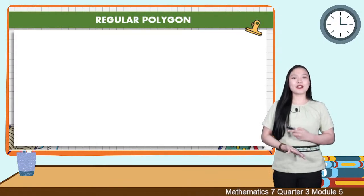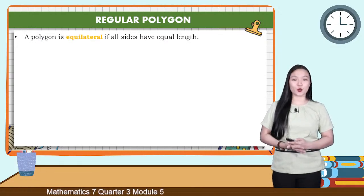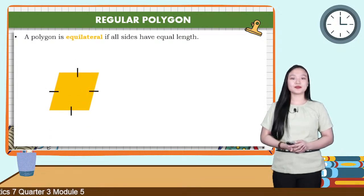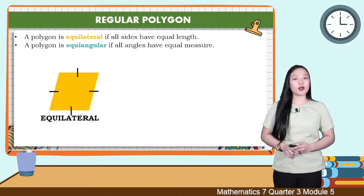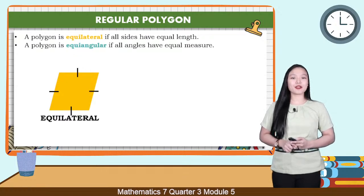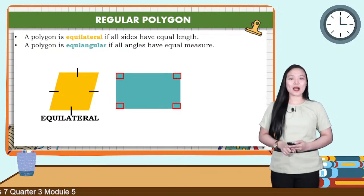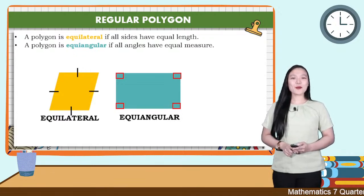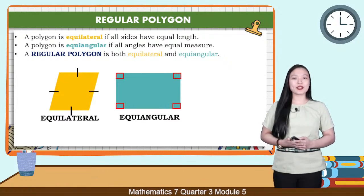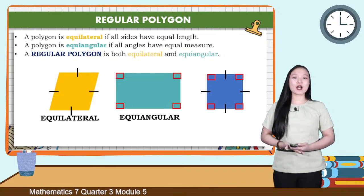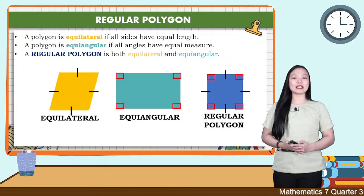How will you know that a polygon is a regular polygon? A polygon is equilateral if all sides have equal length. A polygon is equiangular if all angles have equal measure. A regular polygon is both equilateral and equiangular — all sides have equal length and all angles have equal measure.